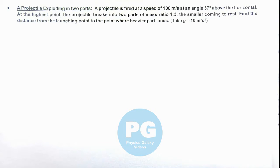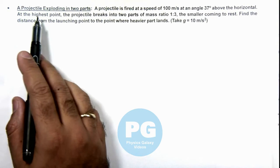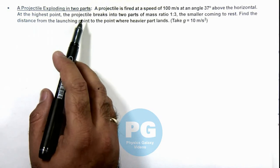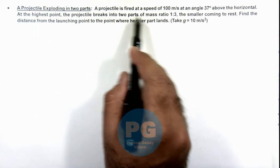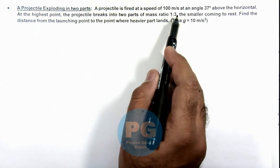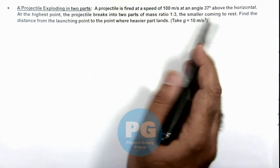In this illustration we'll discuss about a projectile exploding in 2 parts. We are given that a projectile is fired at a speed of 100 meters per second at an angle 37 degrees above the horizontal.